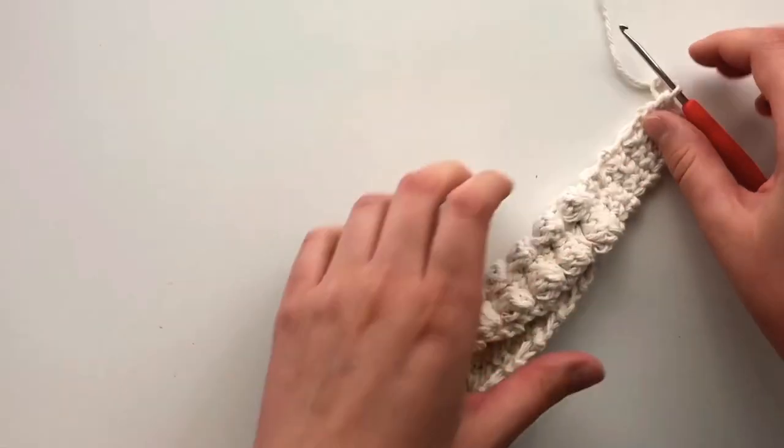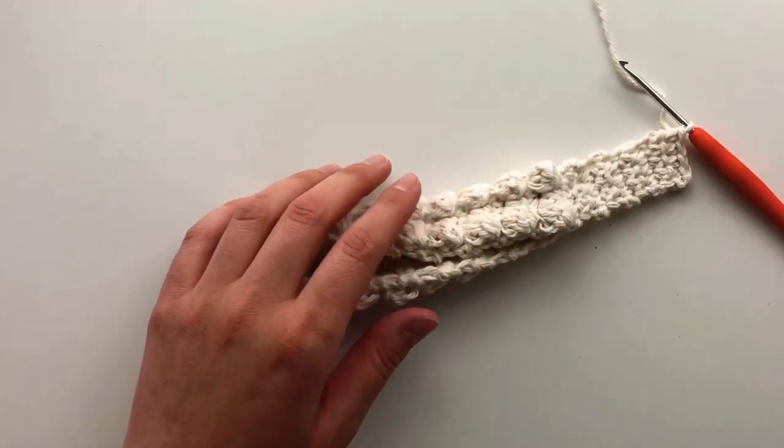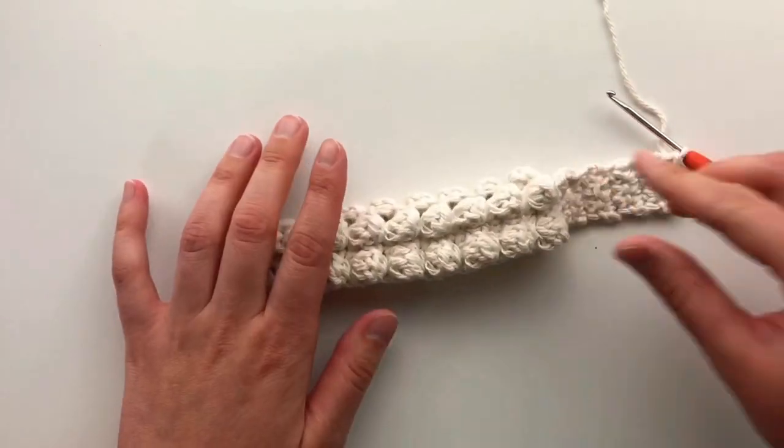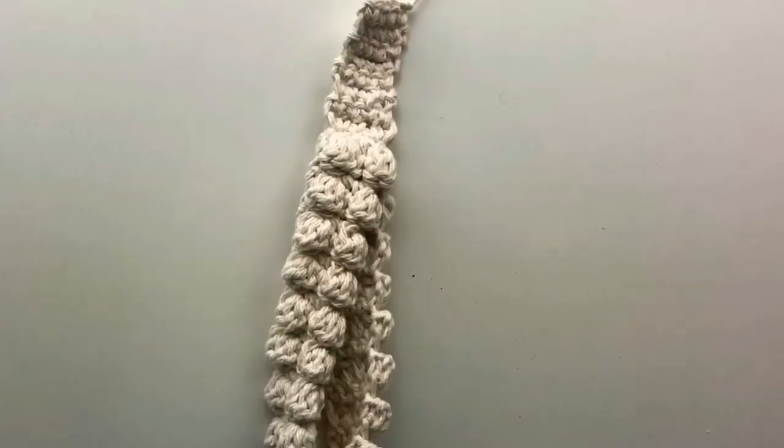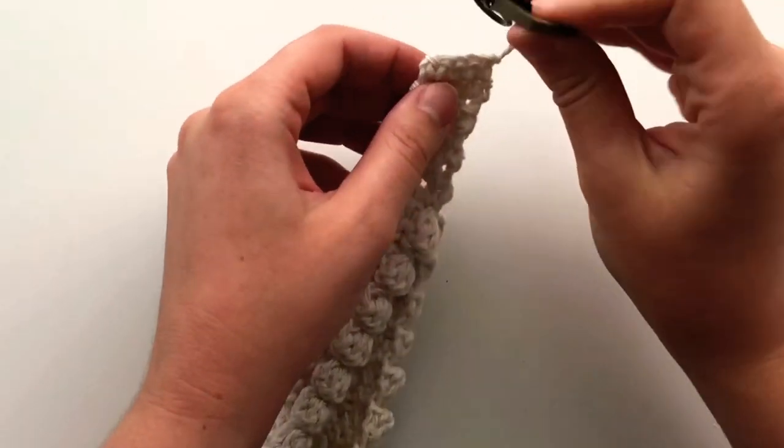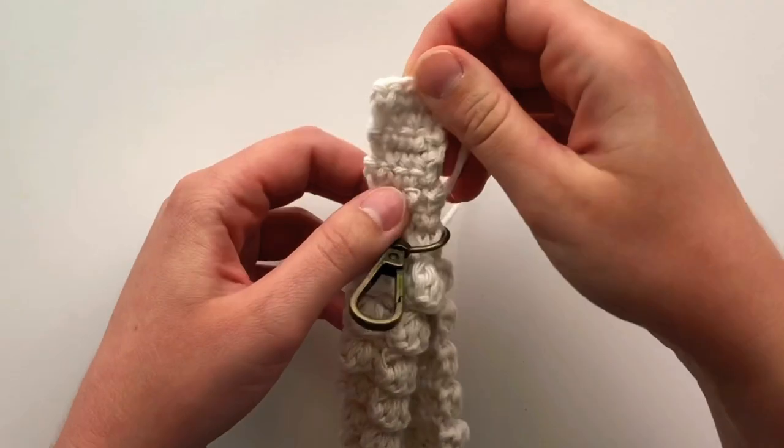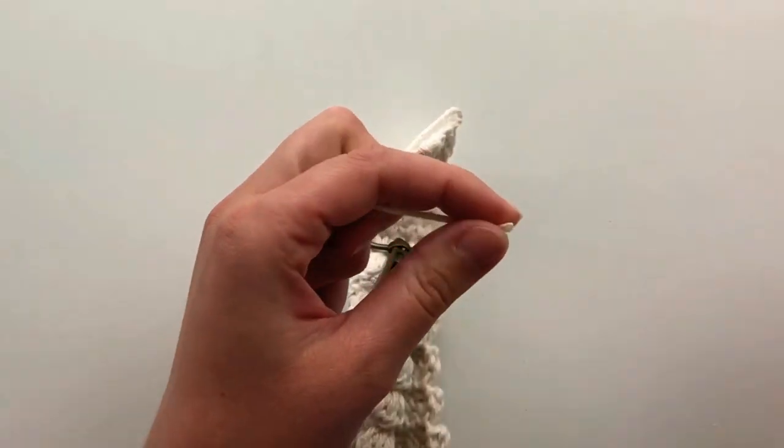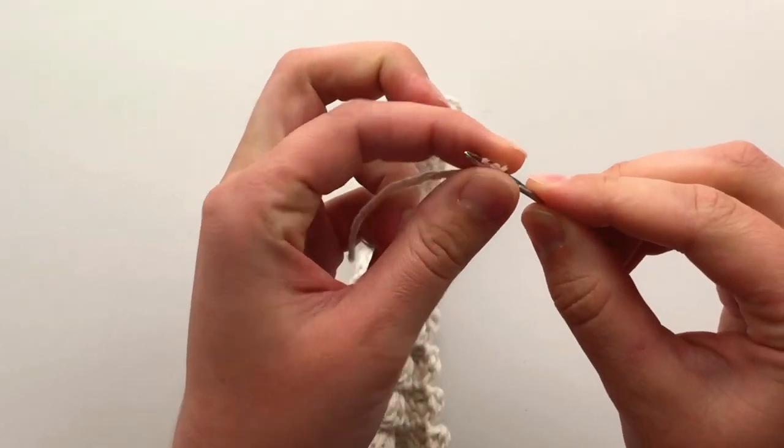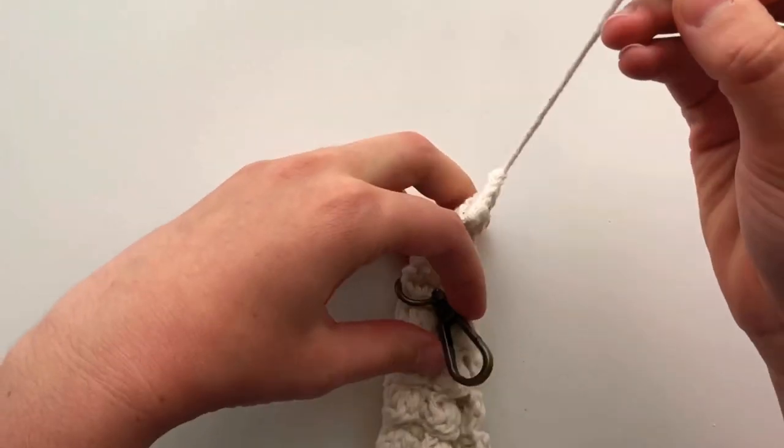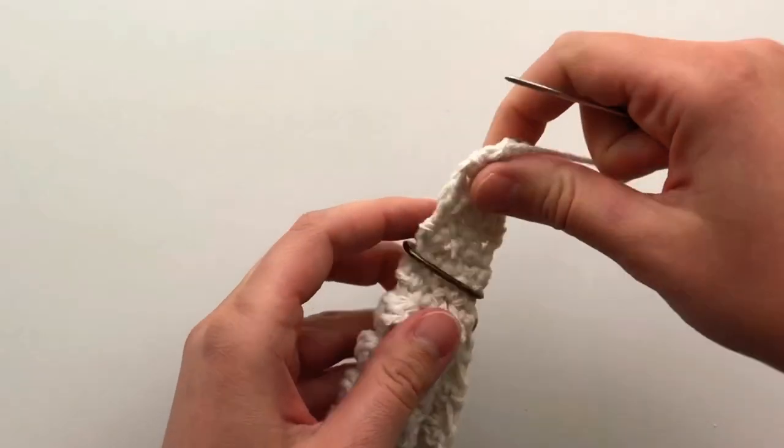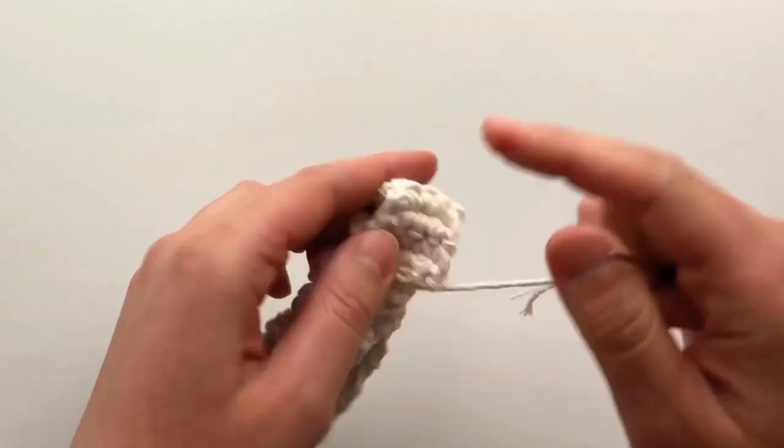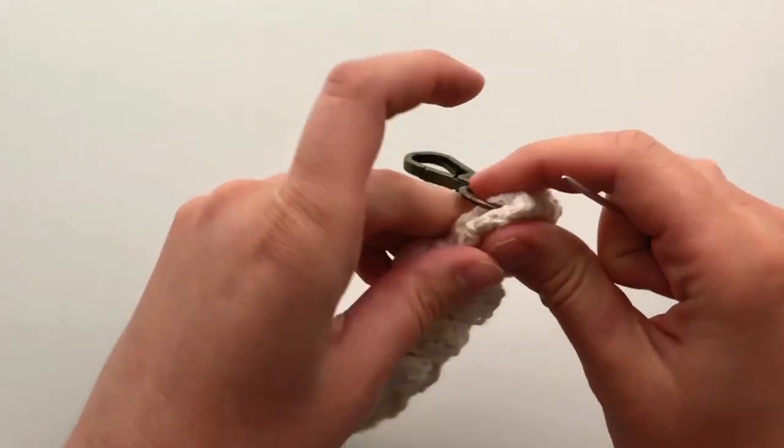Finish off leaving about an 8 inch tail for sewing. We will now be adding our 1 inch D-hook swivel clasp to turn our project into a keychain. Thread your yarn with your darning needle, add your clasp, fold the top in half, and we are now going to sew the top and bottom together.